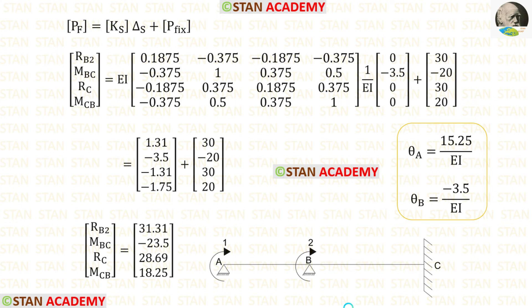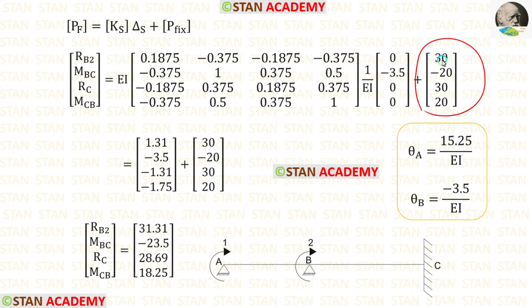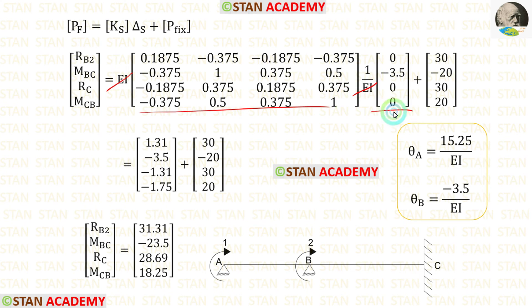Now let us find the final reactions and moments in span BC. We apply the stiffness matrix for span BC. In the displacement matrix, theta_B is applied for M_BC (second coordinate); remaining terms are 0. We apply the fixed end reactions and moments calculated initially. After eliminating EI, multiplying the matrices, and adding them, we obtain the reactions and moments in span BC.